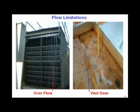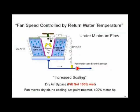The weir dam ensures the face of the tower always has some water on it — there's never a dry passageway where air can bypass the fill. We want that air to always have to pass through some moisture on the face of the fill to keep the tower working. The weir dam lets you turn down to 50% easily.